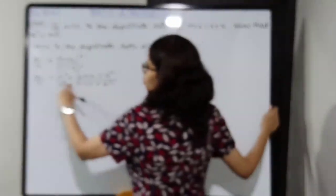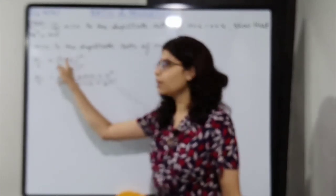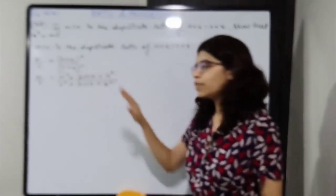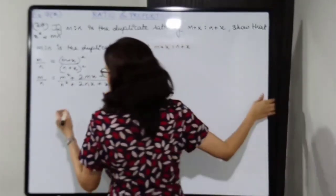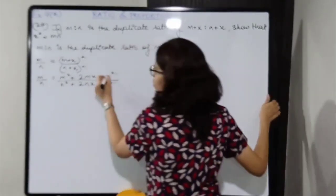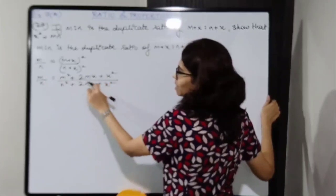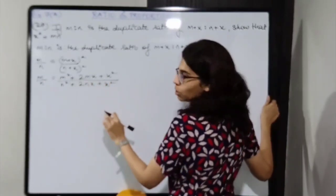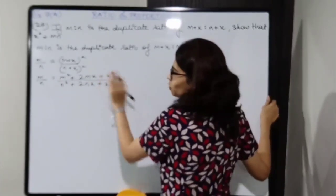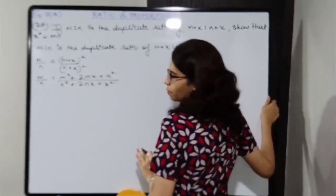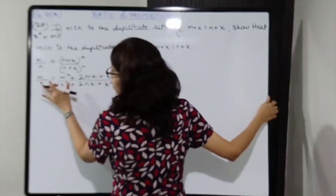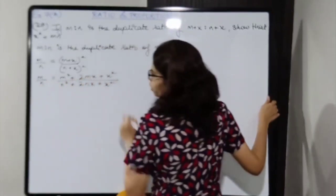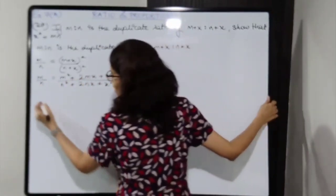Now cross multiply. You could have cross multiplied earlier only. Note that you cannot cancel out terms because there is a plus sign in between. Nothing can be cancelled. Now shifting this over here and this over here — cross multiplying basically.